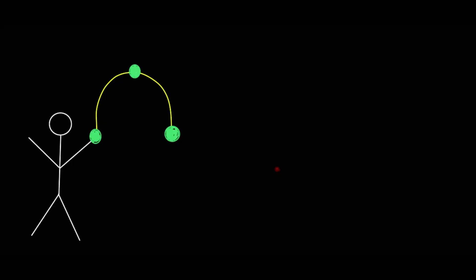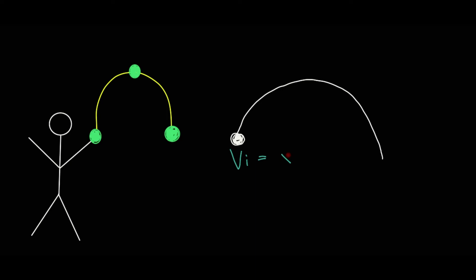The second scenario is a situation where we throw something up and then catch it at the same height. So because it is not dropped but thrown, this means there is an initial velocity.